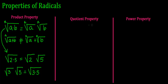My second property is the quotient property and it is very similar to that first property. Let me go back one moment — when I say n, it means I could have square roots or even cube roots. So if I have the cube root of 8 times 2, I can also rewrite it as separate cube roots.